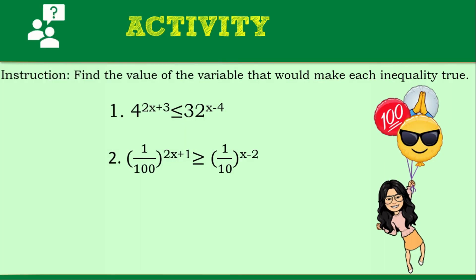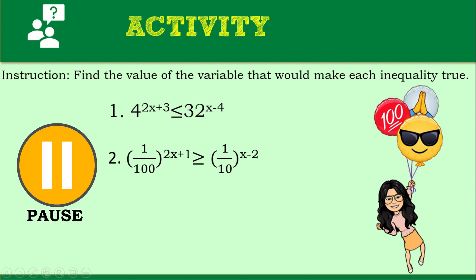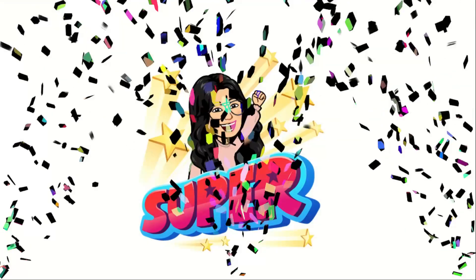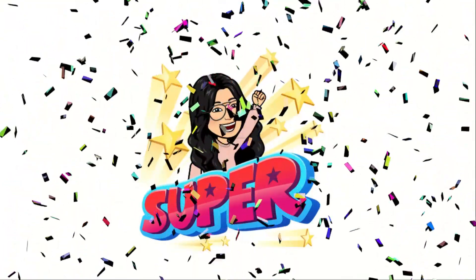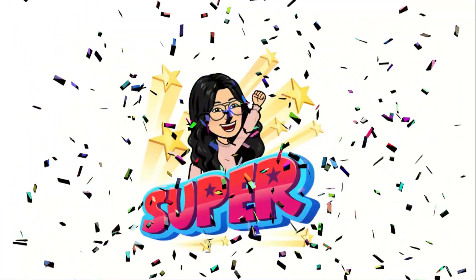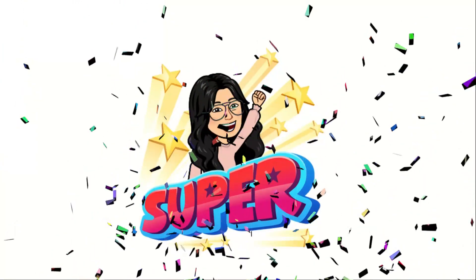We will now proceed to the activity. I prepared a two-item assessment for you to check your understanding based on our lesson. The instruction is to find the value of the variable that would make each given inequality true — find x. You have item number one and item number two. You can pause this video and take your time. We are done with our lesson about solving exponential inequalities. Good job for today, senior high school students, and see you in the next lesson.